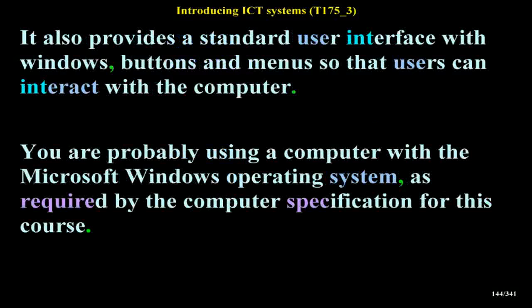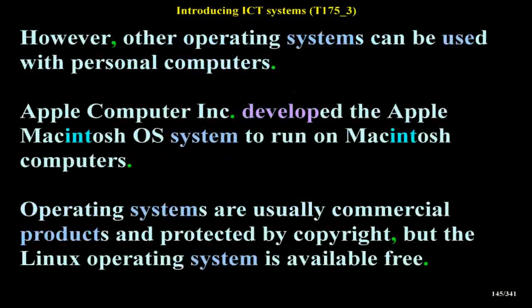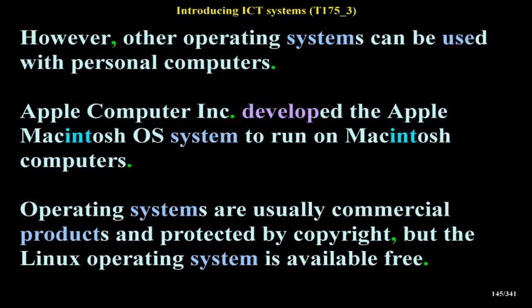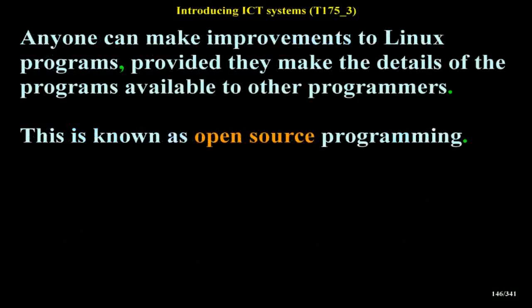You are probably using a computer with the Microsoft Windows Operating System. However, other operating systems can be used with personal computers. Apple Computer Incorporated developed the Apple Macintosh OS system to run on Macintosh computers. Operating systems are usually commercial products protected by copyright, but the Linux operating system is available free. Anyone can make improvements to Linux programs, provided they make the details available to other programmers — this is known as Open Source Programming.